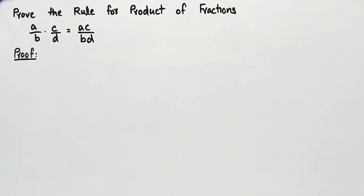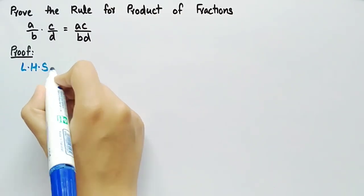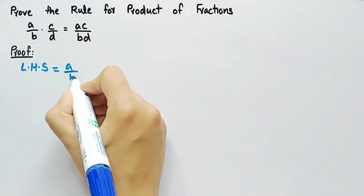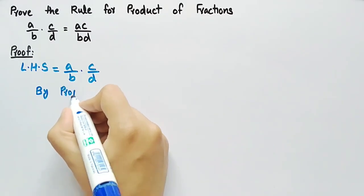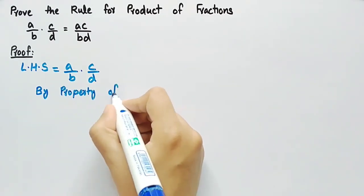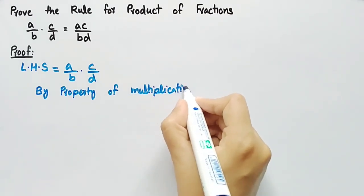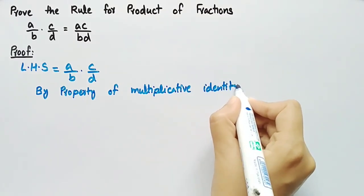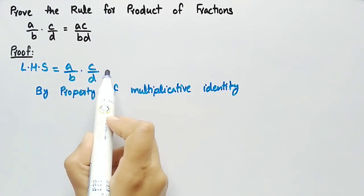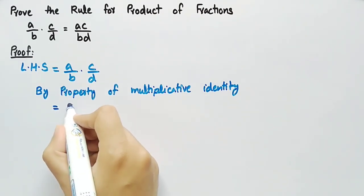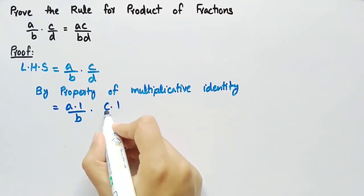Now coming towards its proof. If we take the left hand side, it is equal to a by b dot c by d. By the property of multiplicative identity, we can write a as a dot 1 and c as c dot 1. So it becomes a dot 1 divided by b, dot c dot 1 divided by d.